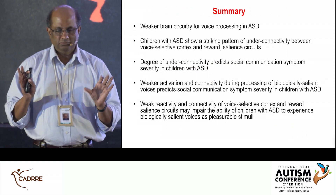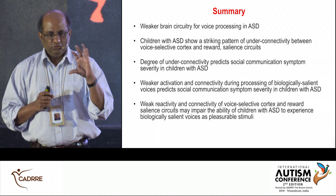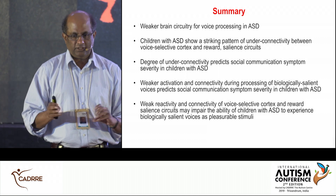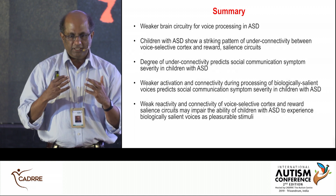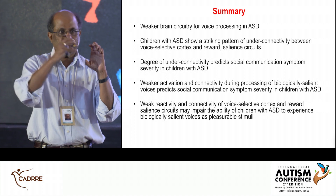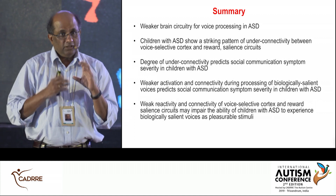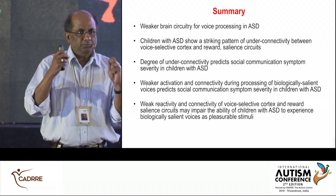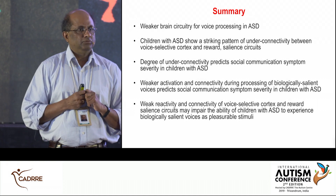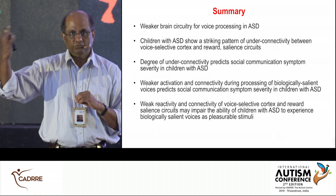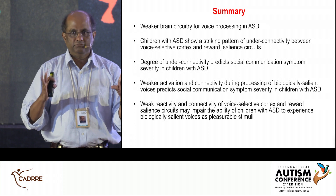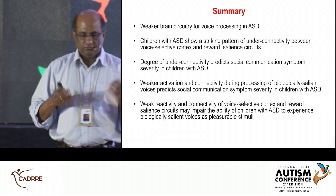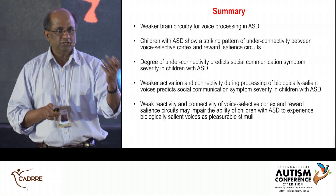All roads lead to Rome. A brief summary: we see a weaker brain circuit for voice processing — a striking pattern of weak connections between the voice selective cortex and the reward circuit. The under-connectivity predicts individual differences in social communication and becomes a biomarker to probe progress over time. This is a good neural target for evaluating the efficacy of interventions, because voice processing is the core of how social communication skills must be built.